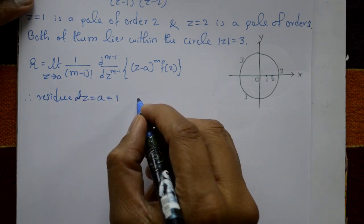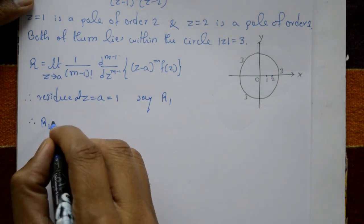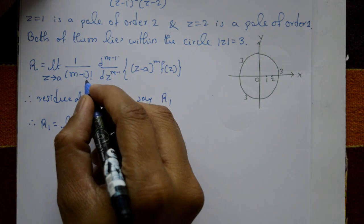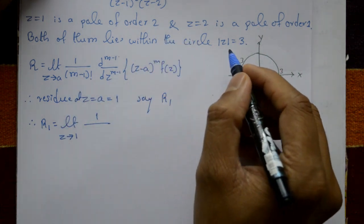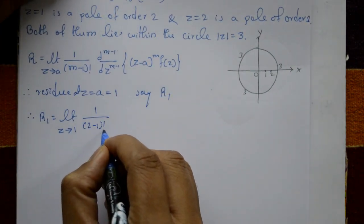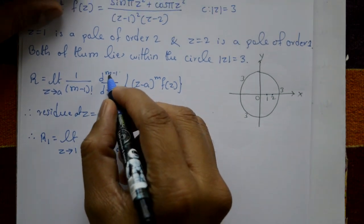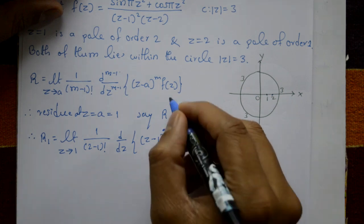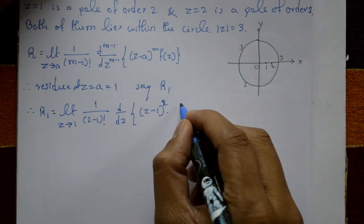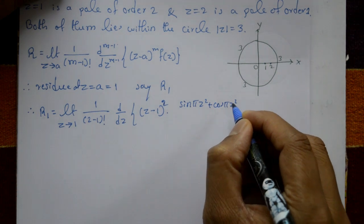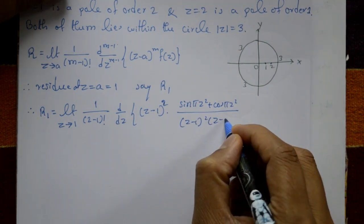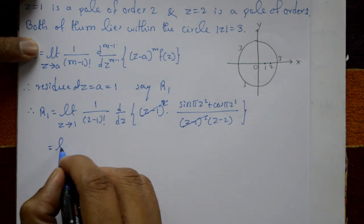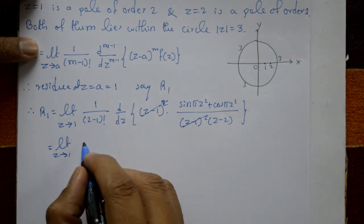Residue at z = 1, called R1: R1 = limit as z tends to 1 of 1/(2-1)! × d/dz × (z-1)² × f(z). Since f(z) = (sin πz² + cos πz²) / [(z-1)²(z-2)], the (z-1)² terms cancel, giving limit z→1 of d/dz [(sin πz² + cos πz²) / (z-2)].